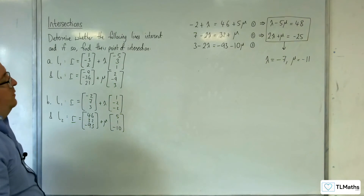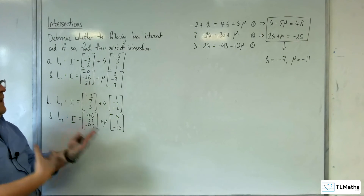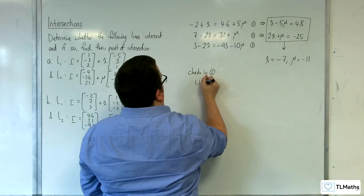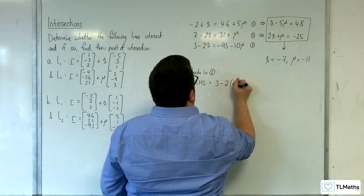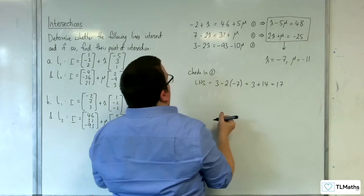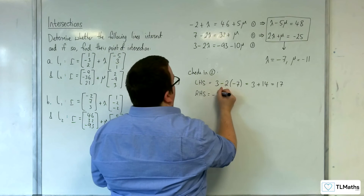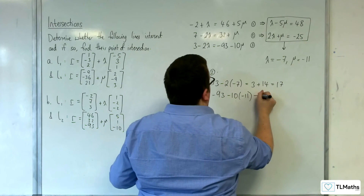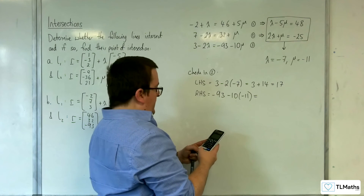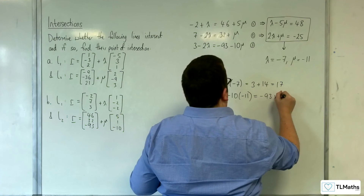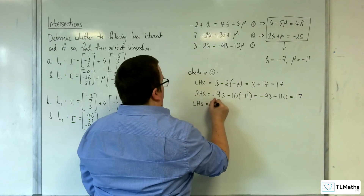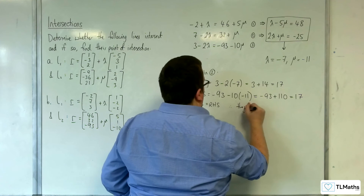So we're going to check in equation 3 like we did last time, and then we'll see if we're at the point of intersection or not. So the left-hand side: 3 take away 2 lots of minus 7, that's 3 plus 14, so 17. And then for the right-hand side, we've got minus 93 take away 10 lots of minus 11, so minus 93 plus 110 is 17. So the left-hand side equals the right-hand side, therefore the lines intersect.